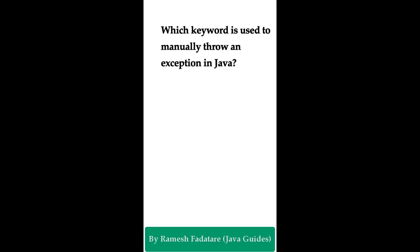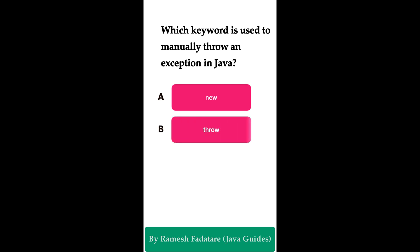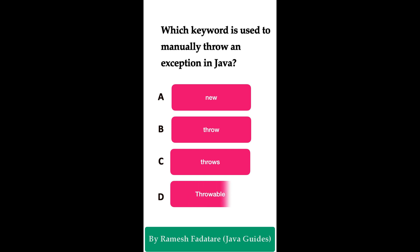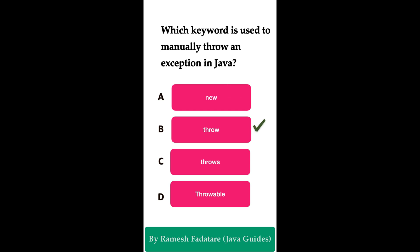Welcome to Java Quiz Series. Here is one more question: which keyword is used to manually throw an exception in Java? Option A: new keyword. Option B: throw keyword. Option C: throws keyword. Option D: Throwable class. You have five seconds to answer this question.